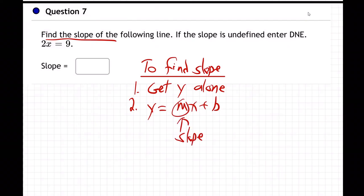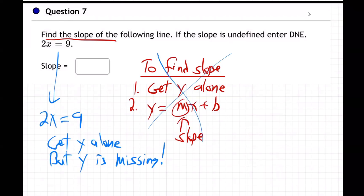Okay, so I'm going to take this equation, 2x = 9, and what? Get y alone. But there is no y. Y is missing, right? How can we get y alone when y is missing? We can't. It's impossible. So forget about this stuff. The normal way we do this is not going to work because y is missing.